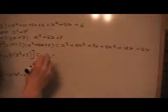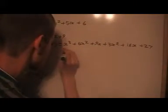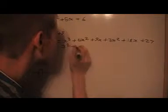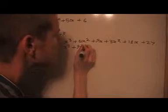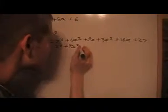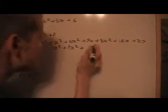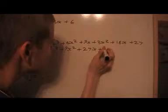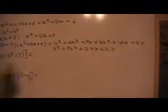And we can simplify this by combining these like terms. I get 9x squared. Because I've got a 6x squared and a 3x squared. I've got a 9x and an 18x. That's 27x. Plus the 27. So x plus 3 cubed comes out to be that.